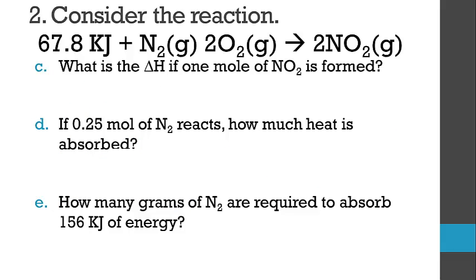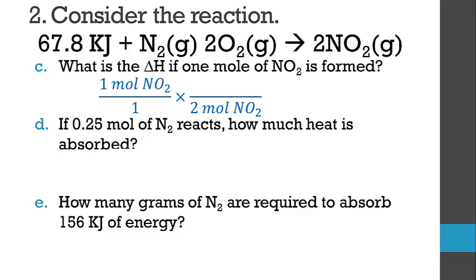Now we can do some stoichiometry with heat. We can write a mole ratio that includes heat. For example, what is the change in enthalpy if one mole of nitrogen dioxide is formed? We start with one mole of nitrogen dioxide, put moles of nitrogen dioxide on the bottom, and from the balanced equation there are two moles of nitrogen dioxide. When two moles form, we need to absorb 67.8 kilojoules. So the answer is exactly half of 67.8, because we're only forming half as many moles.